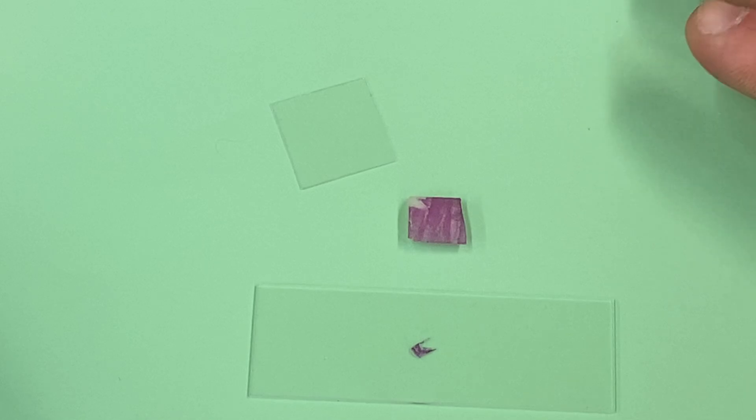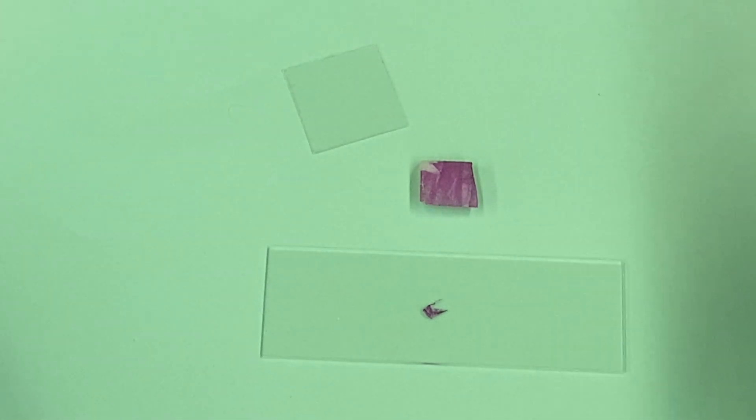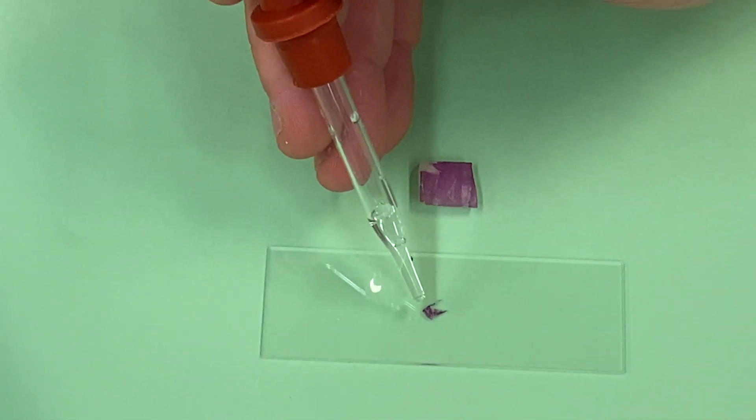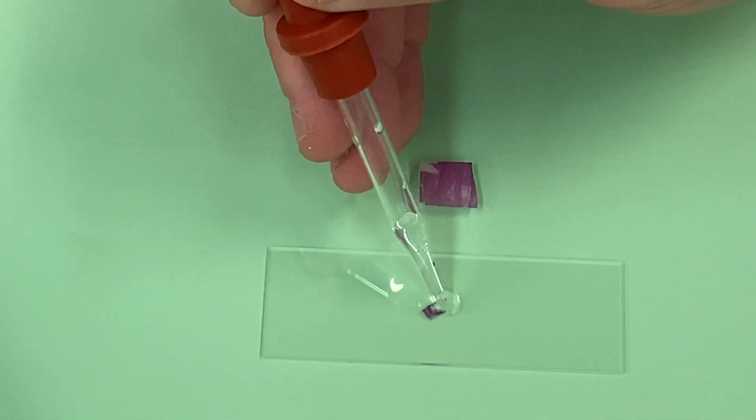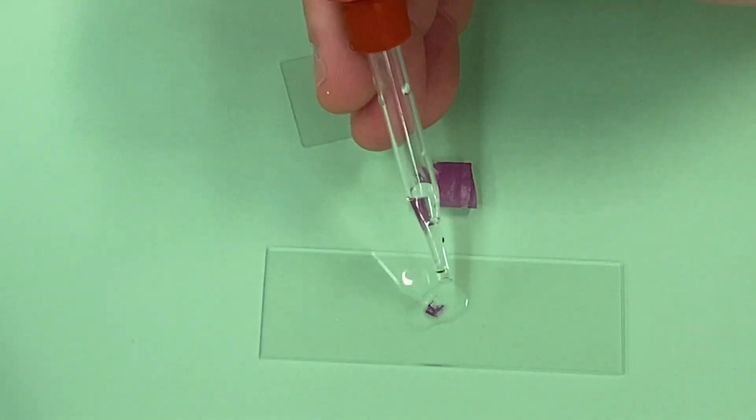So we have the little piece of onion epidermis on there. We're going to put just a tiny, tiny bit of water, right on it or right next to it would be even better, just enough to kind of float it.